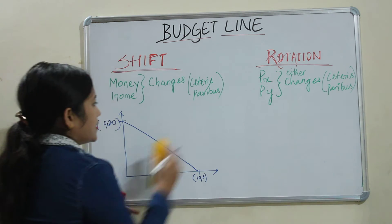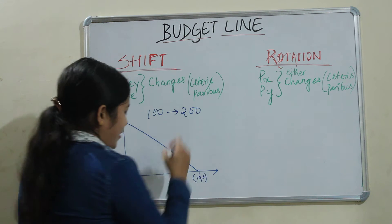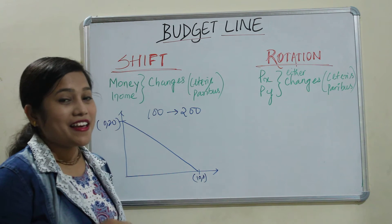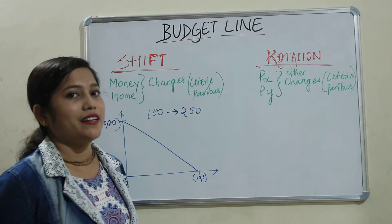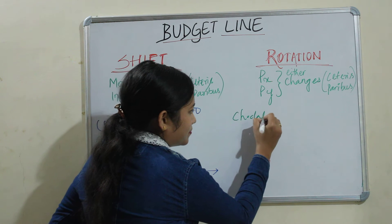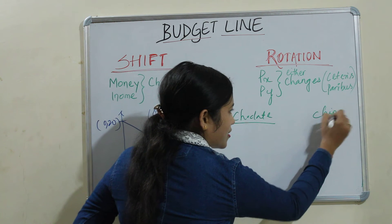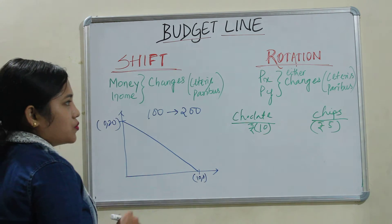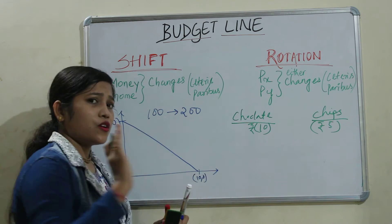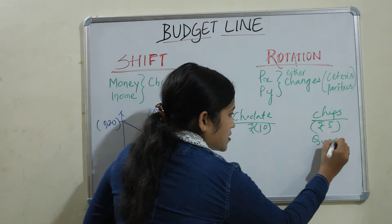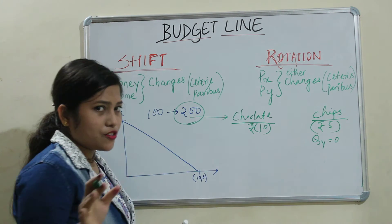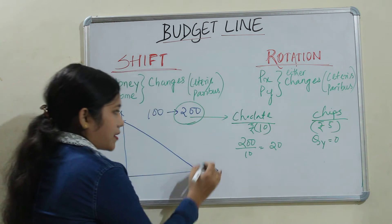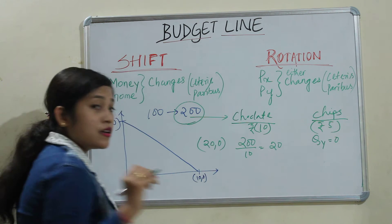Now if this 100 rupees increases to 200 — say your mother is very happy and gives you 200 rupees instead of 100. Now your budget is 200 rupees. The same products — chocolate at 10 rupees and chips at 5 rupees. If you purchase no chips, QY is 0, so 200 divided by 10 gives 20 chocolates. That means 20 chocolates and 0 chips.